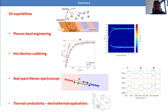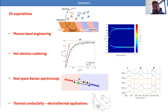In summary: I showed how we make these 2D superlattices in graphene; there are interesting things happening in the phonon band structure; we were able to directly measure the hot electron scattering mean free path; we used real space Raman spectroscopy to understand the Raman data; and one possible application is reduced thermal conductivity of these superlattices. Thank you for listening — happy to answer any questions.